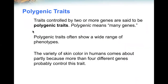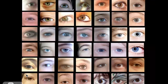Traits controlled by two or more genes are said to be polygenic traits — polygenic means many genes. Polygenic traits often show a wide variety of phenotypes. The variety of skin color in humans comes about partly because more than four types of genes probably control this trait. Similarly, with eye color, there are multiple colors and multiple patterns, clearly more than two genes.